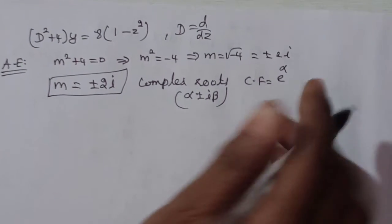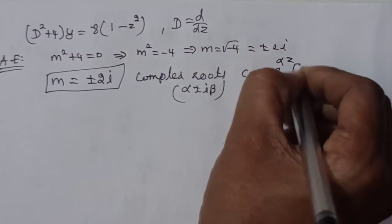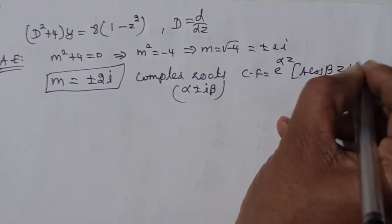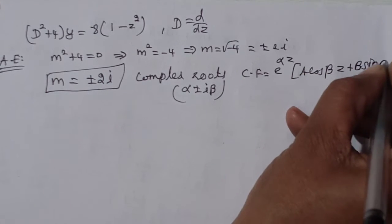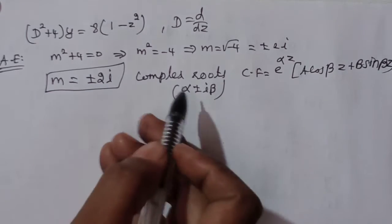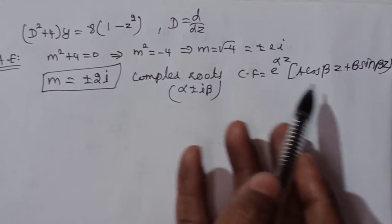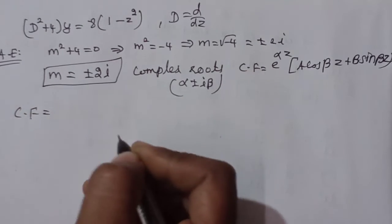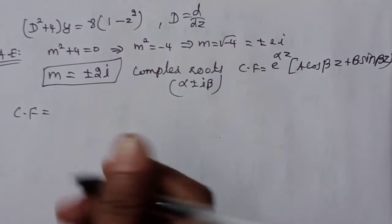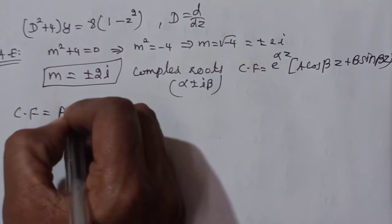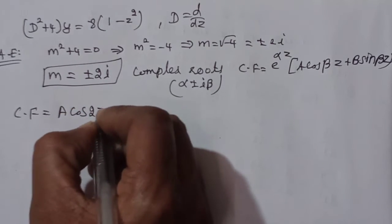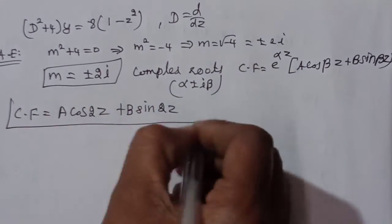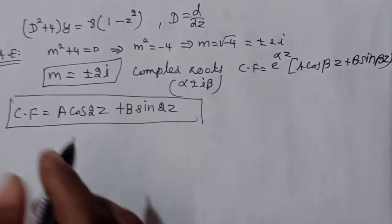For complex roots α ± iβ, the complementary function is e^(αz)(A cos βz + B sin βz). Since α = 0, e^0 = 1, so the complementary function is: CF = A cos 2z + B sin 2z.